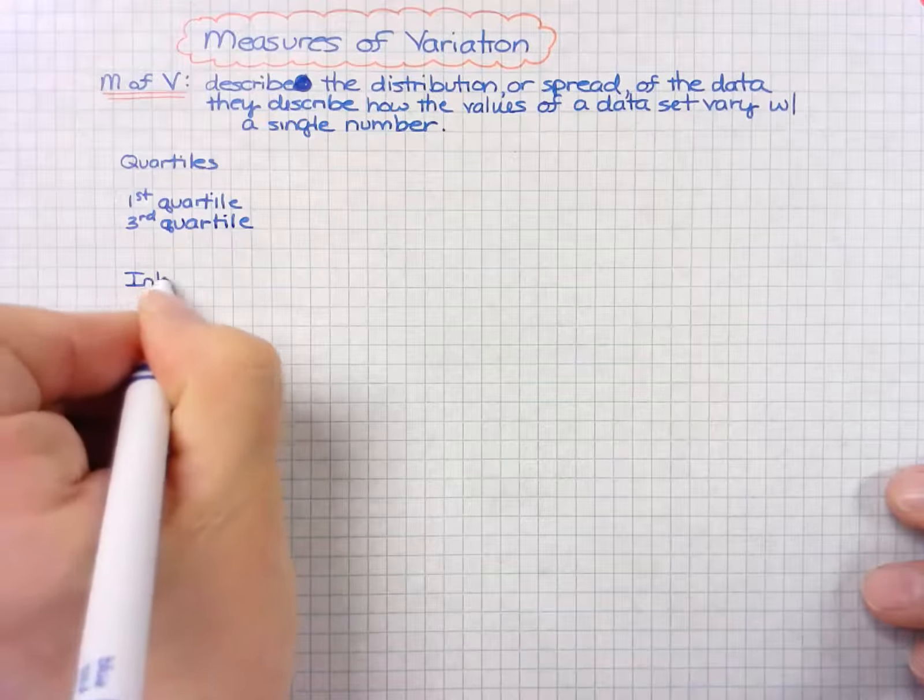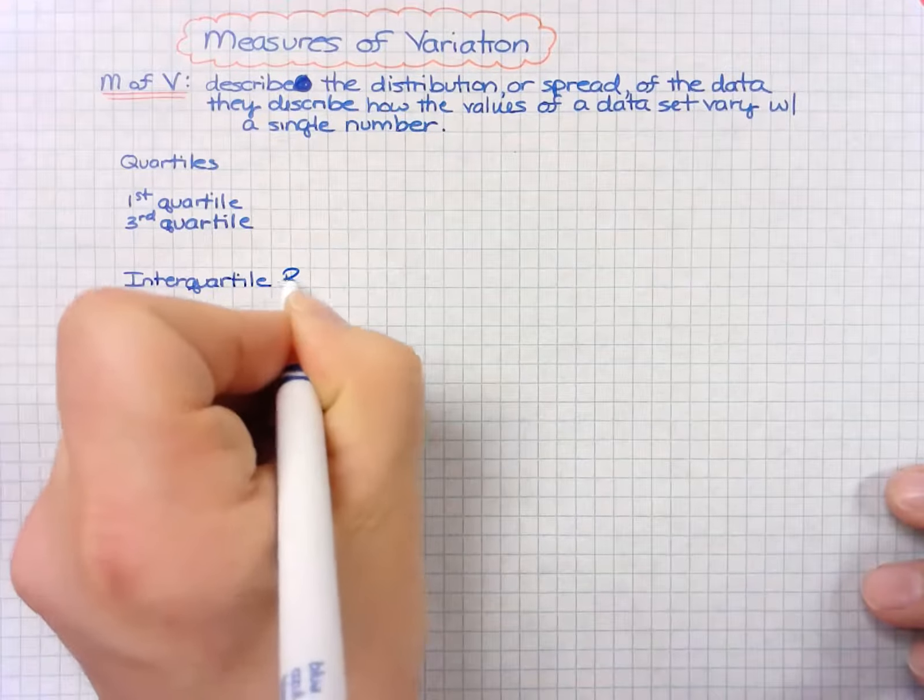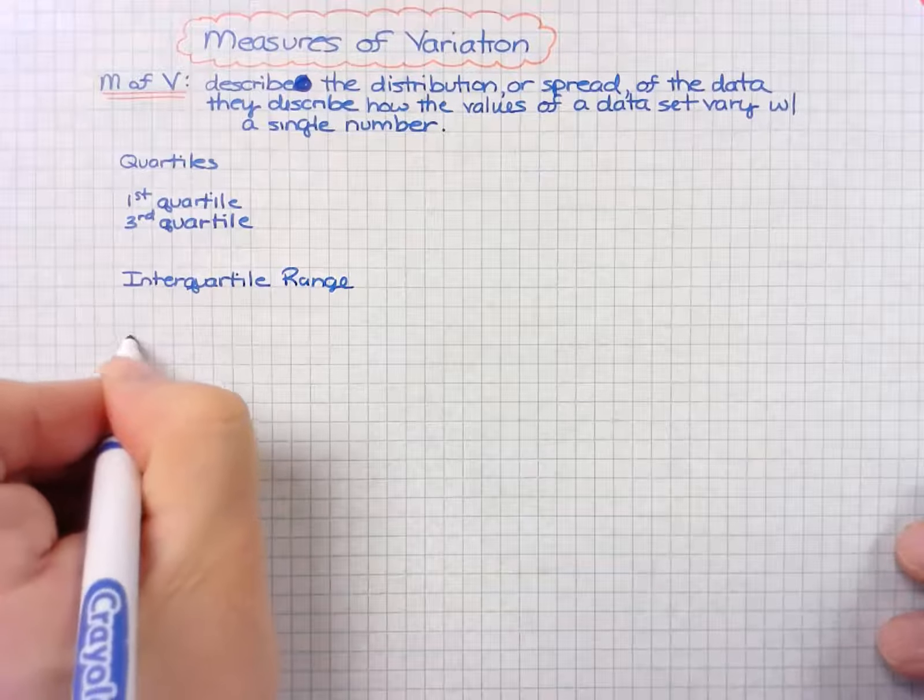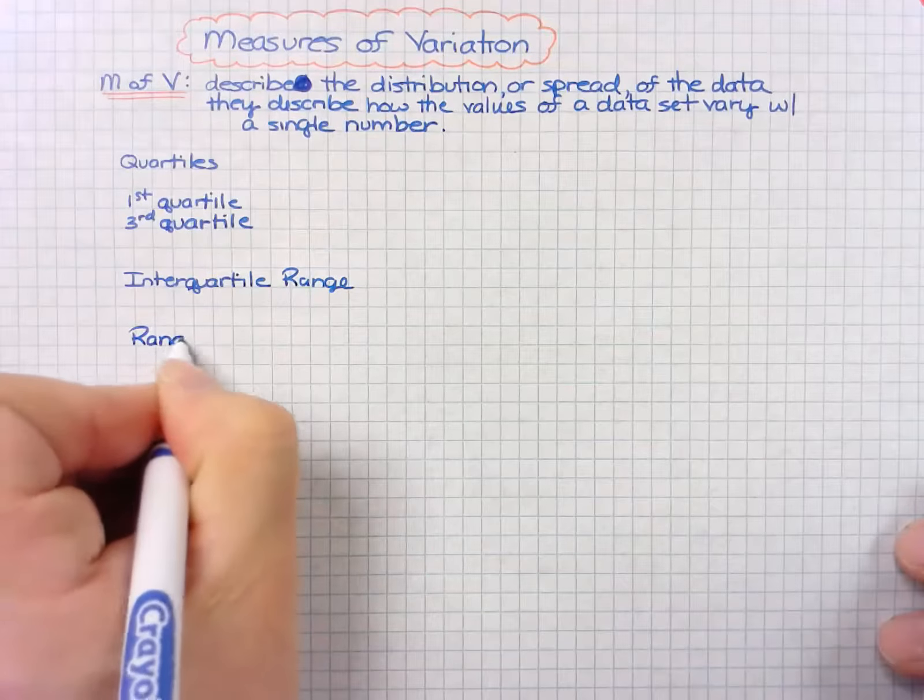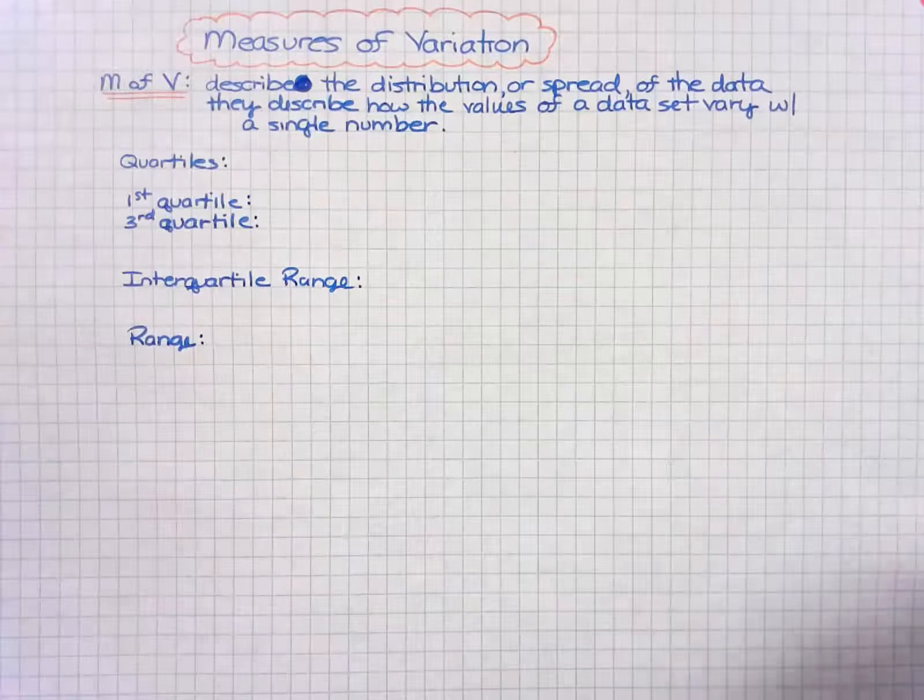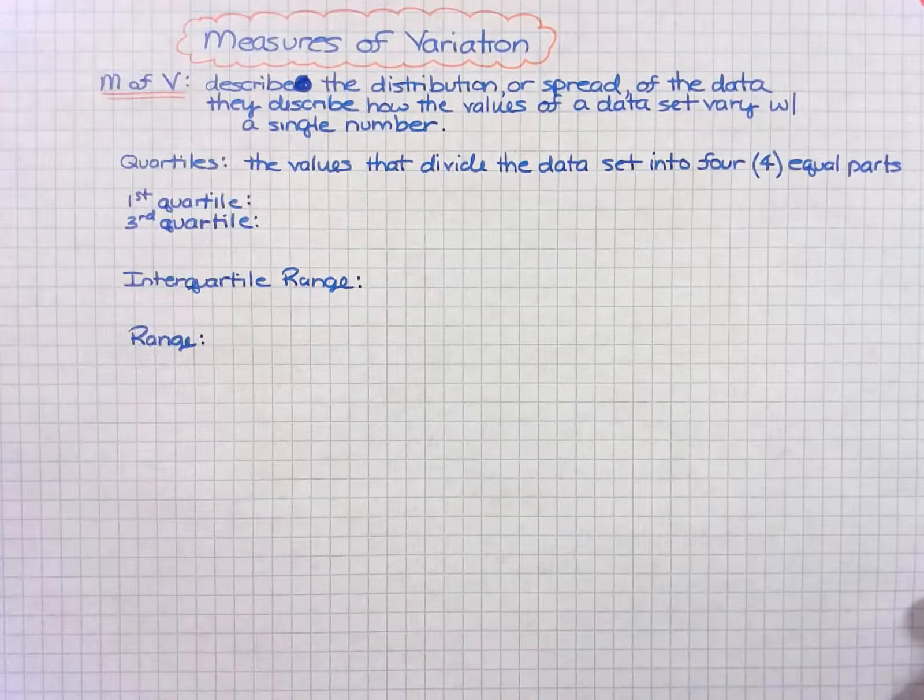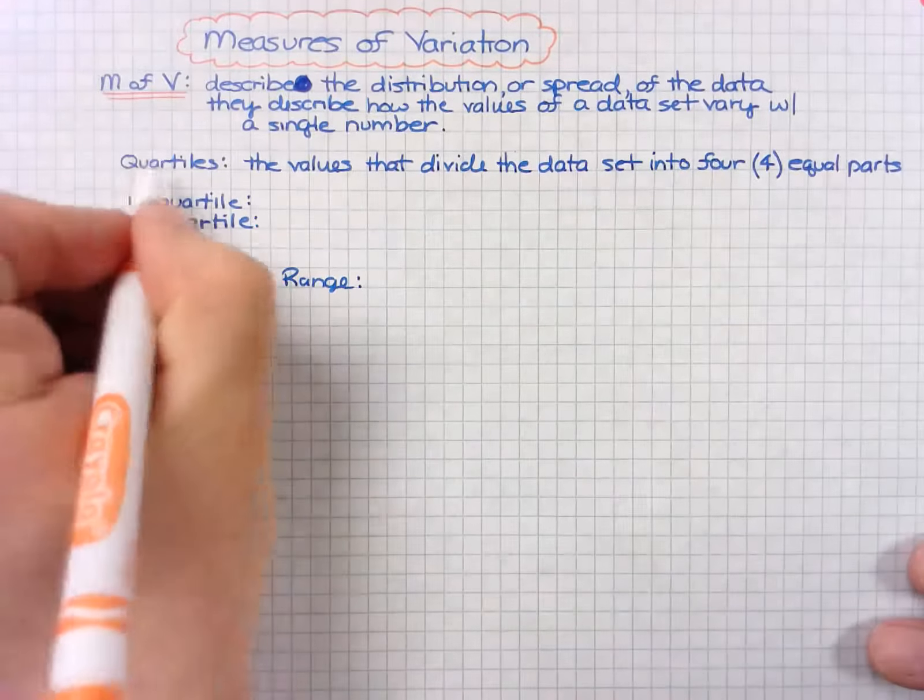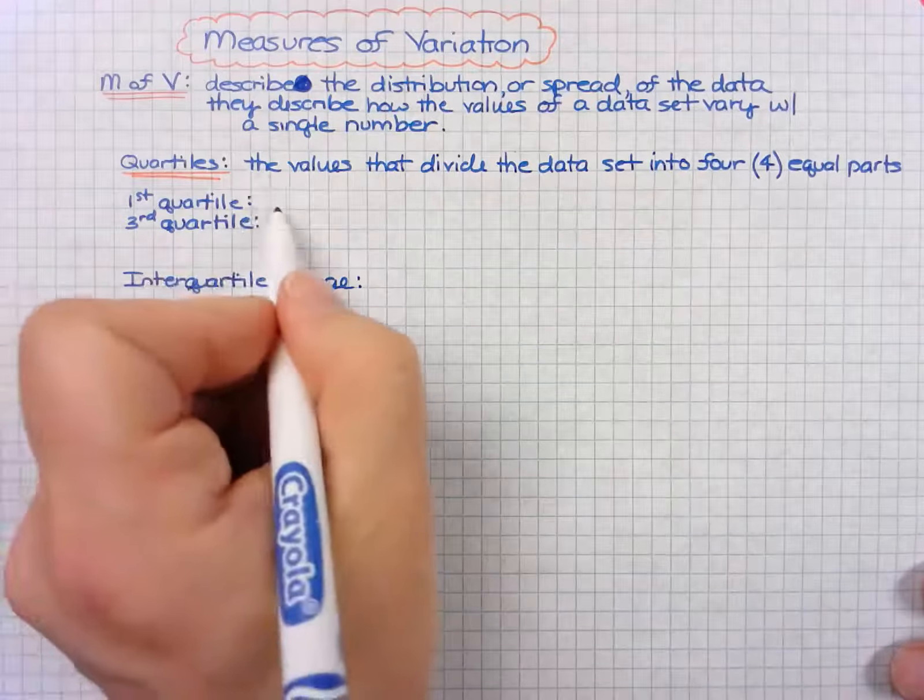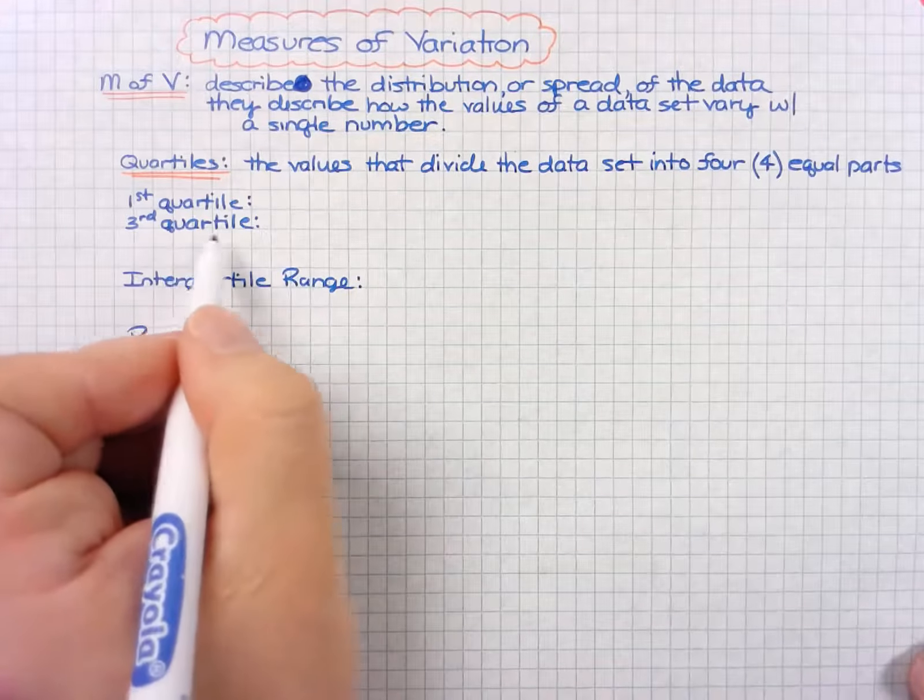We also have something called the interquartile range, and finally we have something called the range. So quartiles are the values that divide the data set into four equal parts.